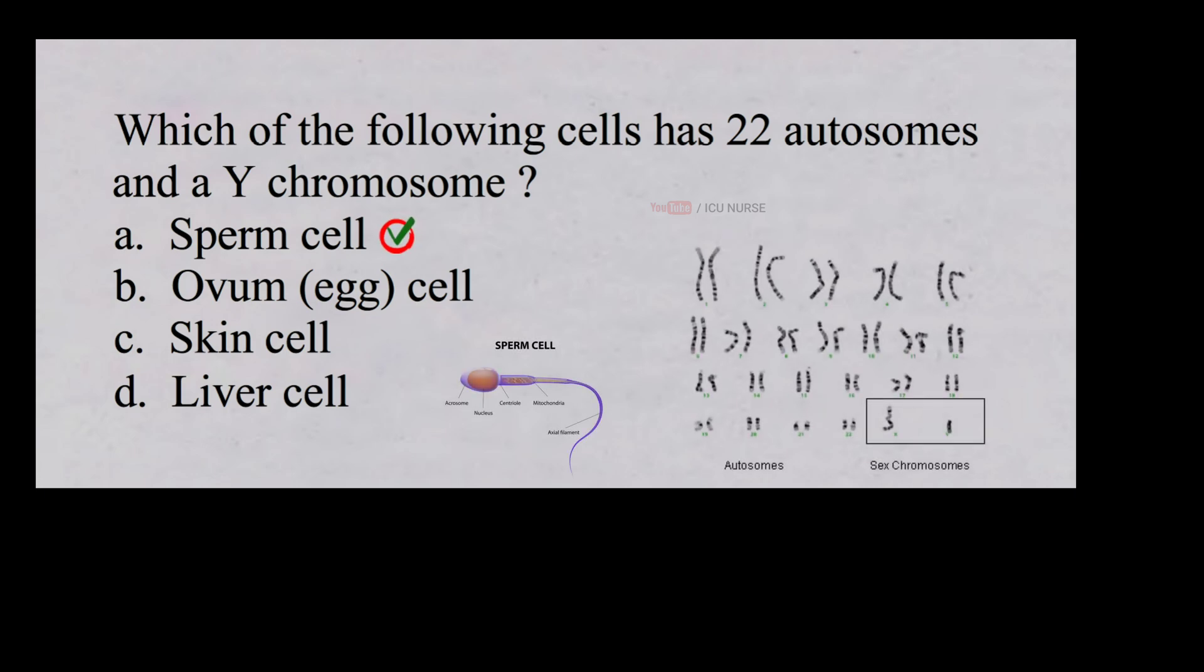Sperm cells or spermatozoa are produced in the testes through a process called spermatogenesis. During spermatogenesis, each sperm cell receives 22 autosomes, which are non-sex chromosomes, and one sex chromosome, either X or Y. In the case specified in the question, the sperm cell contains a Y chromosome, indicating that it carries male genetic information.